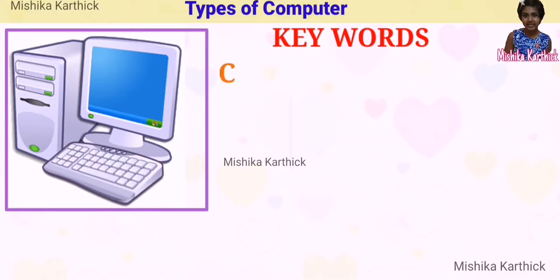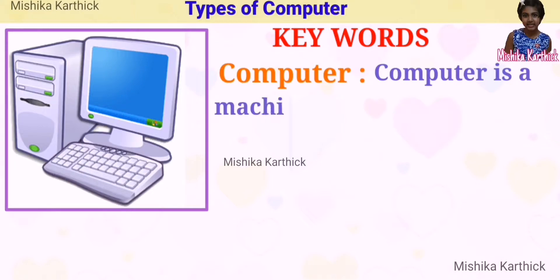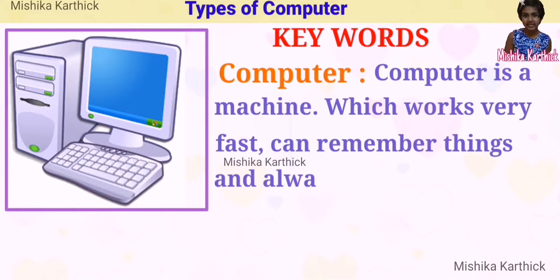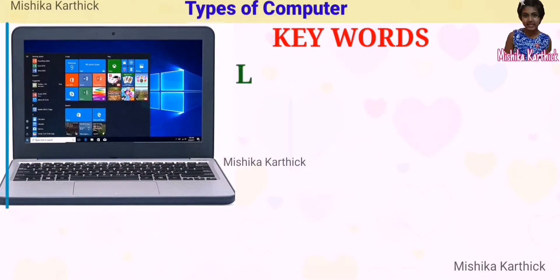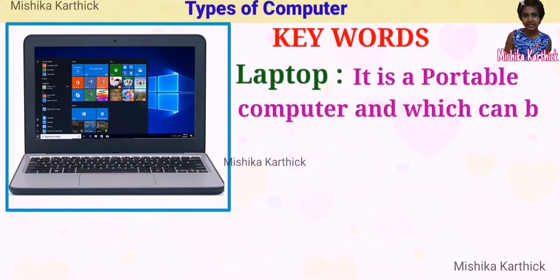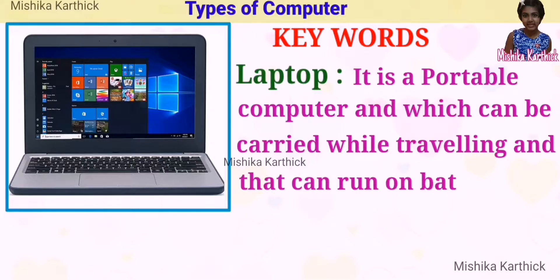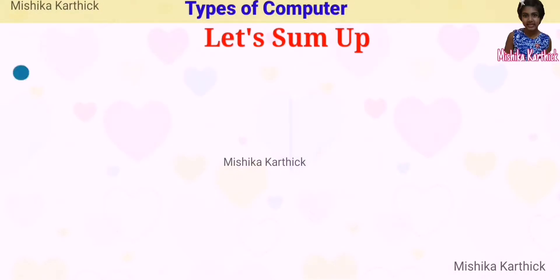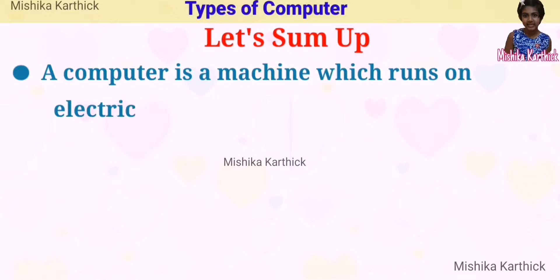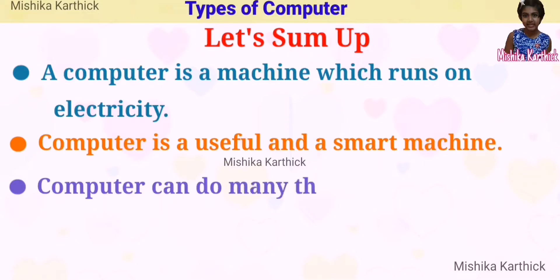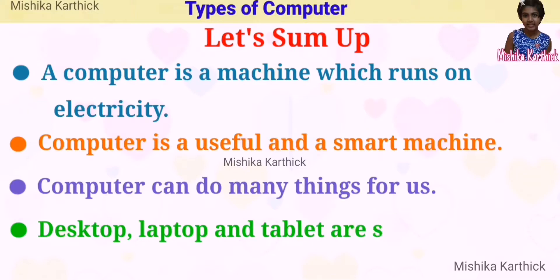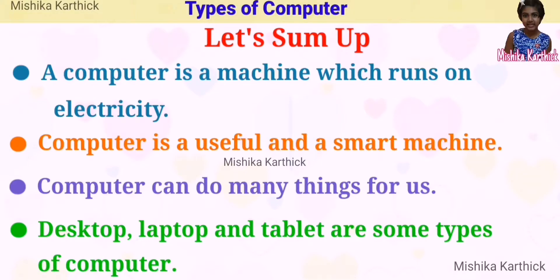Now we will see some words and their meanings. Computer: a computer is a machine which works very fast, can remember things, and always gives the correct answer. PC: it is a personal computer. Laptop: it is a portable computer which can be carried while traveling and can run on battery power. Your computer is a machine which runs on electricity. Computer is a useful and smart machine. Computer can do many things for us. Desktop, laptop, and tablet are some types of computer.